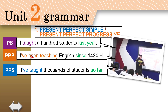Two days ago, three weeks ago. With Present Perfect Progressive, something started in the past — it started in 1424 — and it continues up till now, up till today. It is the same here with Present Perfect Simple.